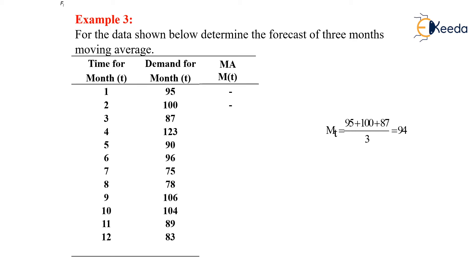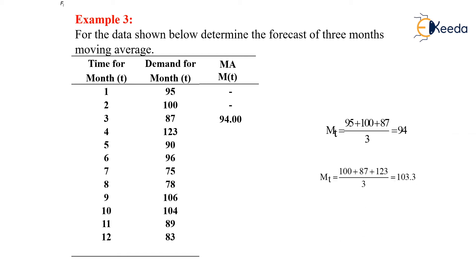In the first 3 months, we have the values 95 plus 100 plus 87, divided by 3, giving us an average of 94. The next 3 months would be 100 plus 87 plus 123, divided by 3, giving us 103.3.